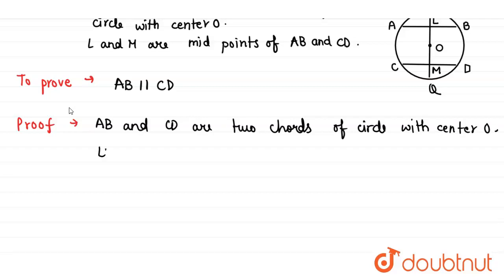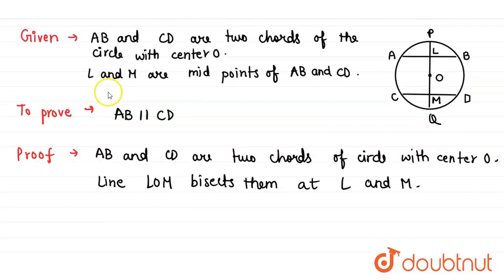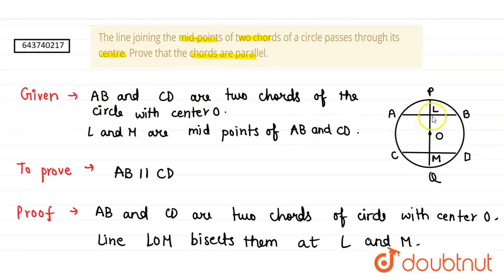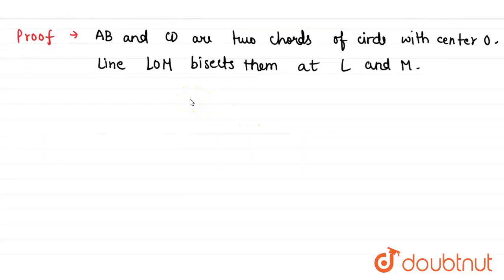And line LOM bisects them at L and M. It is given in the question that it bisects them at L and M, so CM is equal to MD. So therefore,